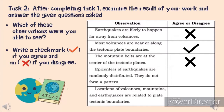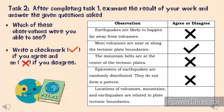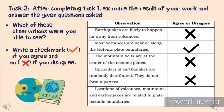The epicenters of earthquakes are randomly distributed and do not form a pattern — agree or disagree? The correct answer is disagree, because the location of earthquake epicenters are not randomly distributed over the Earth's surface. Most earthquake epicenters are concentrated in a narrow zone and are located at the edge of some continents.